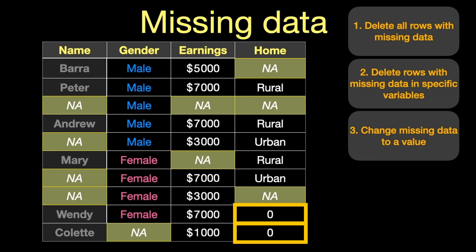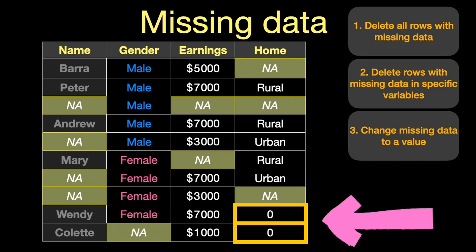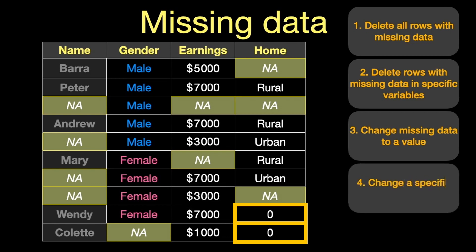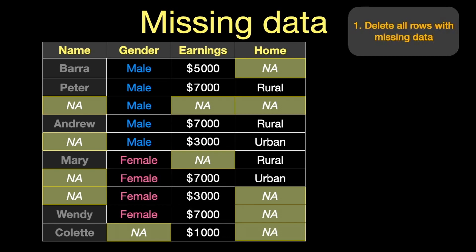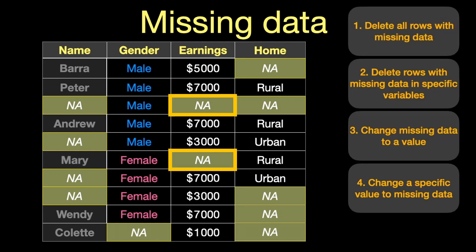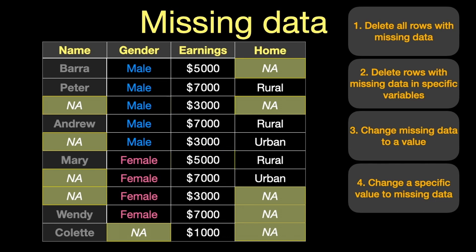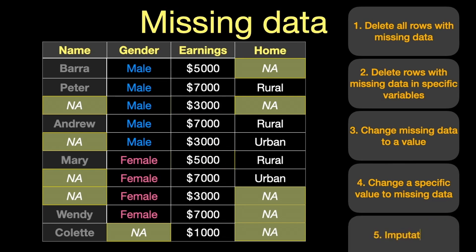Or we might have the exact opposite problem: there is data that is actually missing but it hasn't been identified as missing in the data set — in this case we've got zeros instead of missing. So our fourth strategy is we can change values in a variable into missing data — those zeros have been changed into NA. And finally, our fifth strategy is we might want to replace missing values with our best guess as to what that value should be, and this is called imputation.